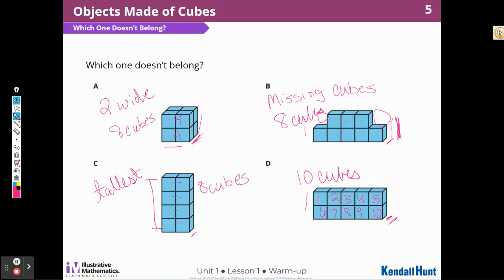So when I think about it, I could have chosen any one of these to be one that doesn't belong, as long as I could write or tell which one or why it didn't belong. So for A, it was the only one that was too wide, B had some missing cubes, C was the tallest of all four, and D had ten cubes. So I could pick something for each one that didn't belong.